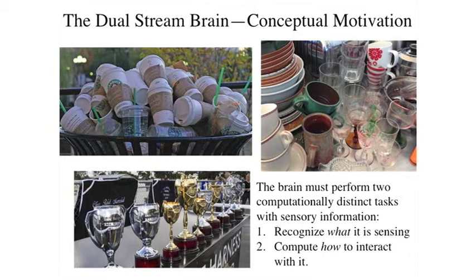To give intuitive sense of the differences between these two computational streams: you can think of what the brain has to do with sensory information in terms of two different kinds of tasks. You have to recognize what is being sensed — what's the content of the information — and you have to compute how to interact with it. These are fundamentally different tasks. Looking at these objects, they look similar from a shape standpoint. Reaching out to grasp any one of them — whether a Starbucks cup, goblet, or trophy — the motor task is essentially the same.